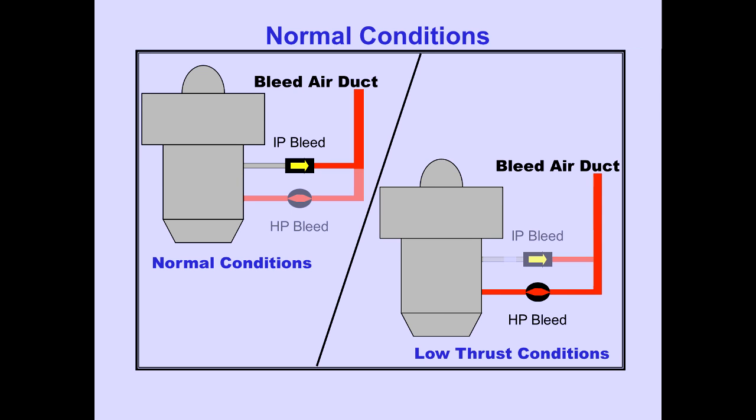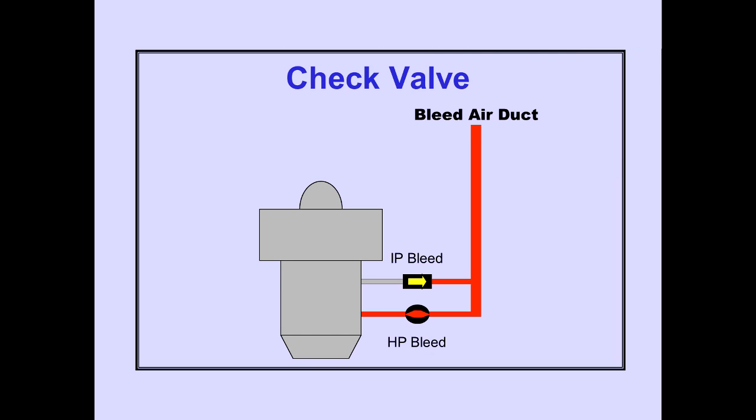During normal conditions, IP bleed is used to pressurize the bleed air duct. If IP bleed is not sufficient to meet bleed air requirements, such as during low thrust settings, HP bleed is used. A check valve in the IP bleed supply duct prevents backflow of air into the engine compressor section when the HP bleed valve is open.